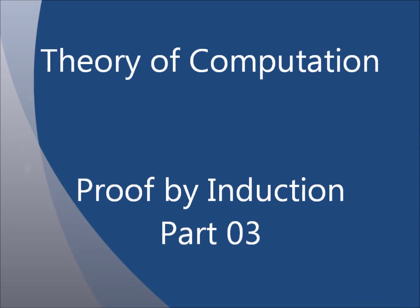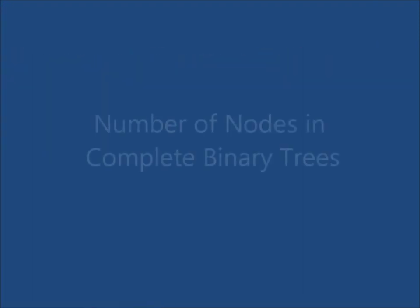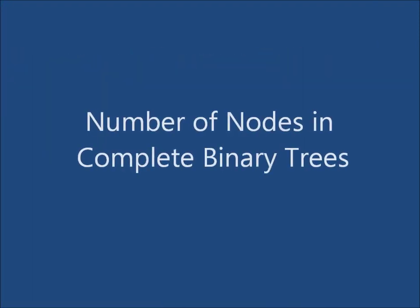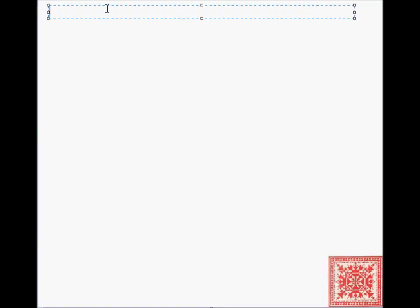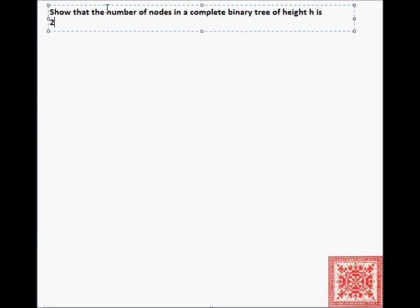In this screencast we'll see that induction can be used for proving many useful things to a computer scientist. Let's start with the number of nodes in complete binary trees. The formal statement that we will prove using induction is: show that the number of nodes in a complete binary tree of height h is equal to 2 to the h plus 1 minus 1.